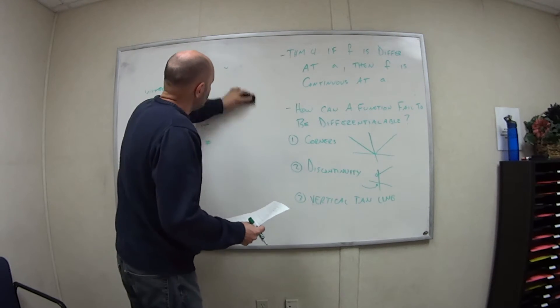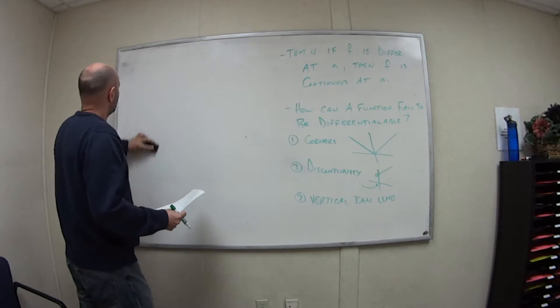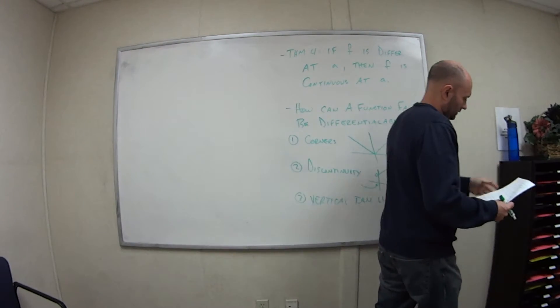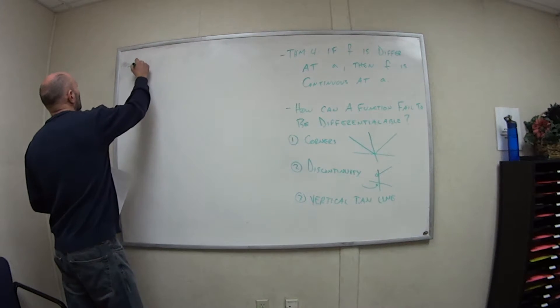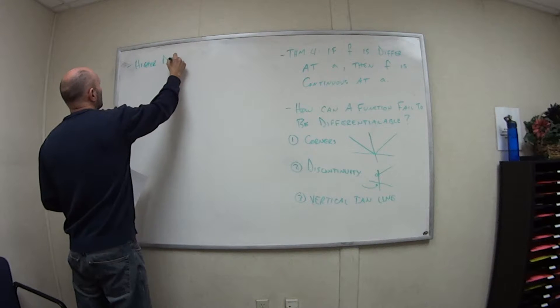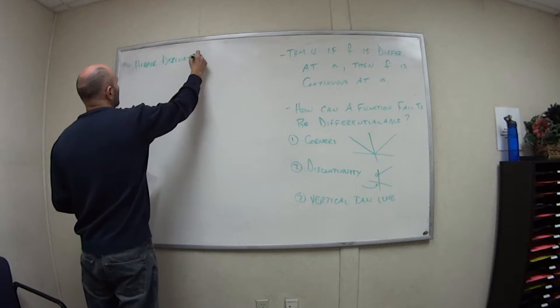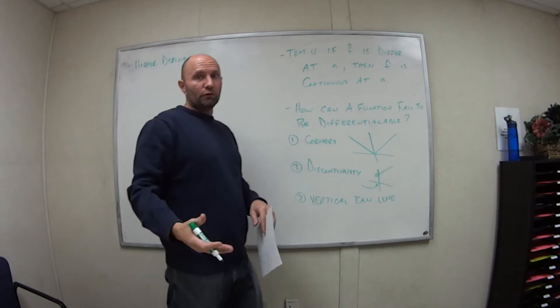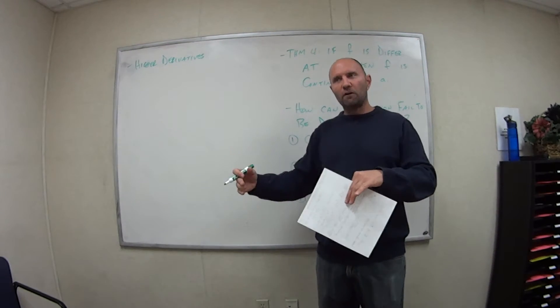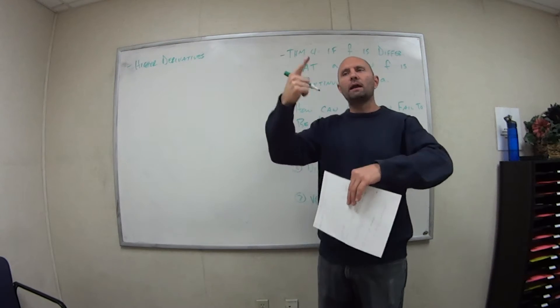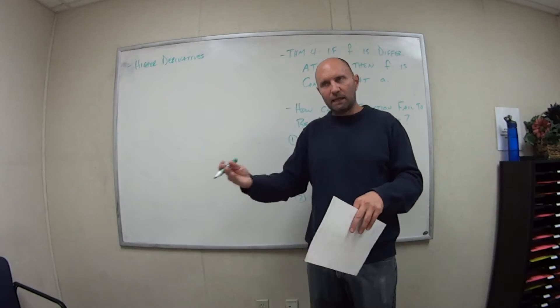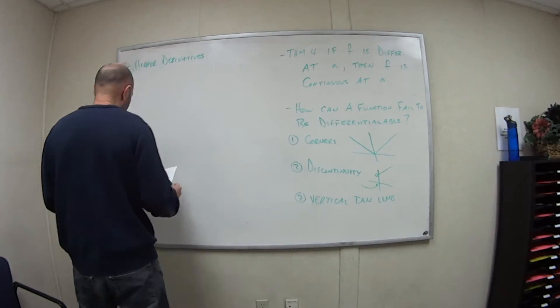So the last idea here of section 2.2 is the idea of higher derivatives. Up until this point we are looking at the first derivative. We have some function, we take its derivative, that's one time, the first derivative. We don't necessarily have to stop there. We can keep going, we can take it as many times as we can until we get zero.